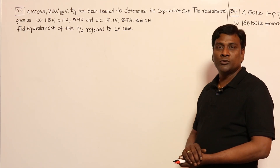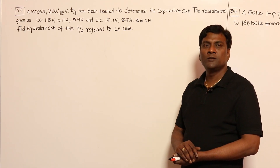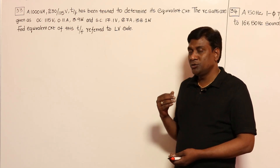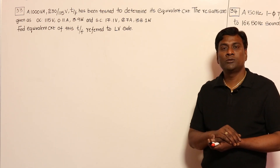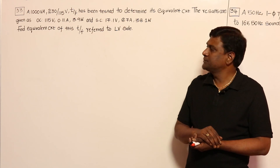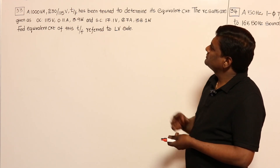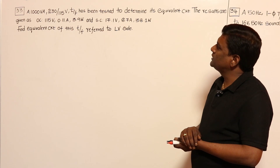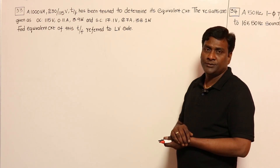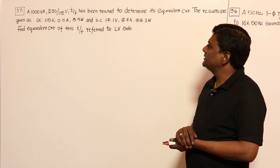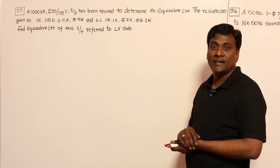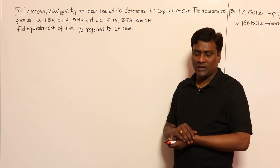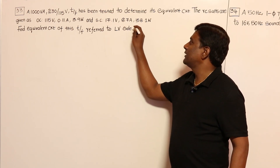Let us discuss some questions on OC and SC test. After this discussion you will understand better about OC and SC test. The transformer data is given as 1000 VA, 230 by 115 volts. OC test data is given and SC test data is also given. We have to find out equivalent circuit parameters referred to LV side.